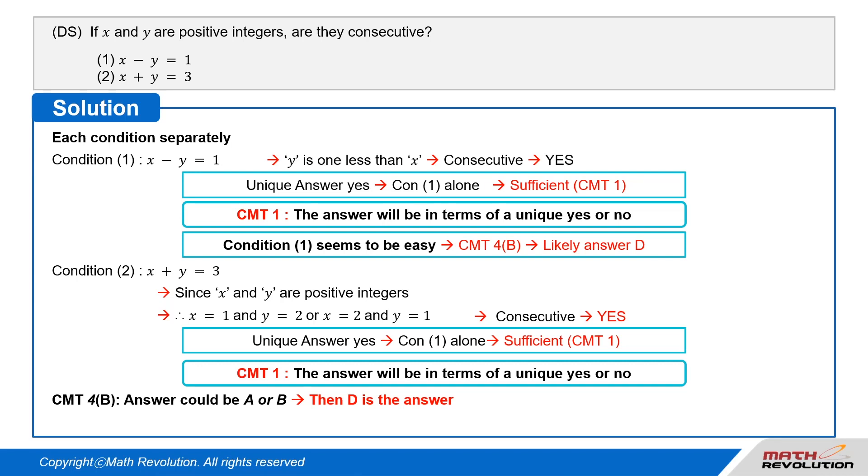The answer is D if condition 1 is easy and condition 2 is hard. Each condition alone is sufficient. So D is the correct answer. Answer D.